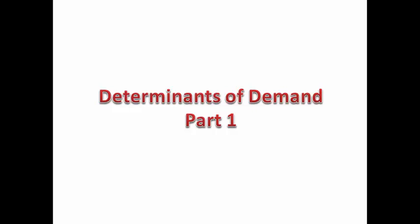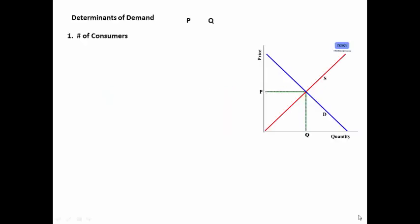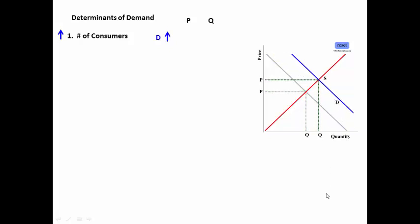Determinants of Demand Part 1. There are eight determinants of demand. Number one is number of consumers. If the number of consumers goes up, then the demand curve increases, causing the curve to shift to the right, driving the price up and the quantity up. So if the population goes up,